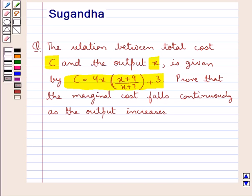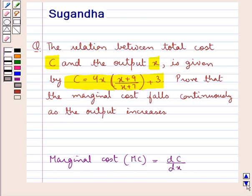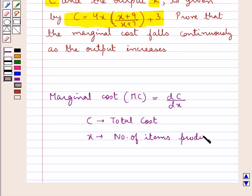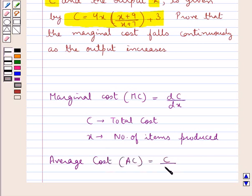Before we move on to the solution, let's discuss what is the marginal cost, that is MC. This is equal to dC/dX, where C is the total cost and X is the number of items produced. The average cost, that is AC, is equal to C upon X — that is total cost upon the number of items produced.